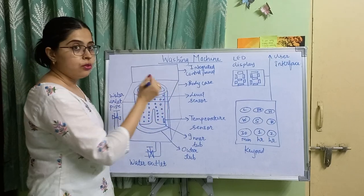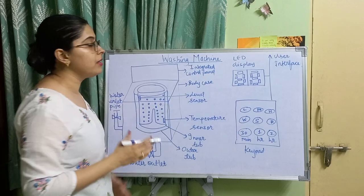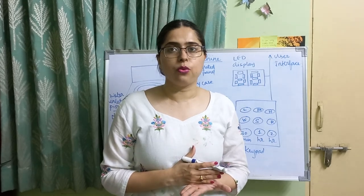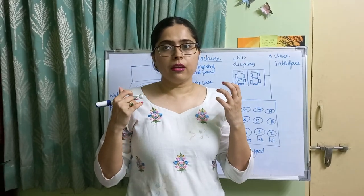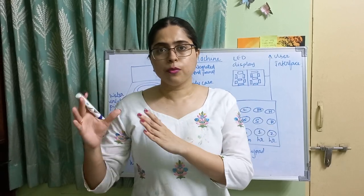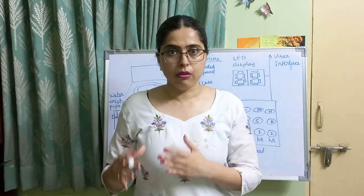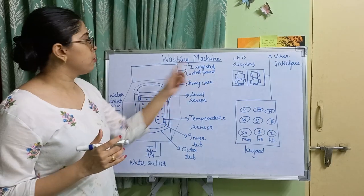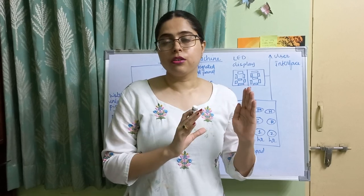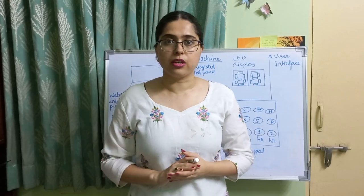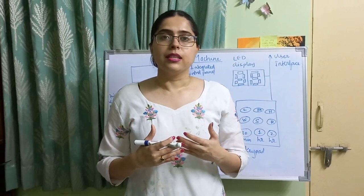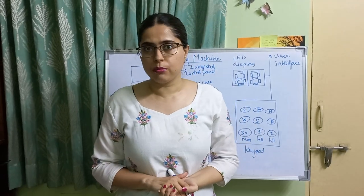The integrated control panel — located at the top, covering the lid of the washing machine — consists of a board having a microcontroller and microprocessor as the core. The input ports of the board are connected to sensors and the output ports are connected to actuators. It also includes user interfaces like a keypad, LCD, and LED, which are all connected to the control unit.